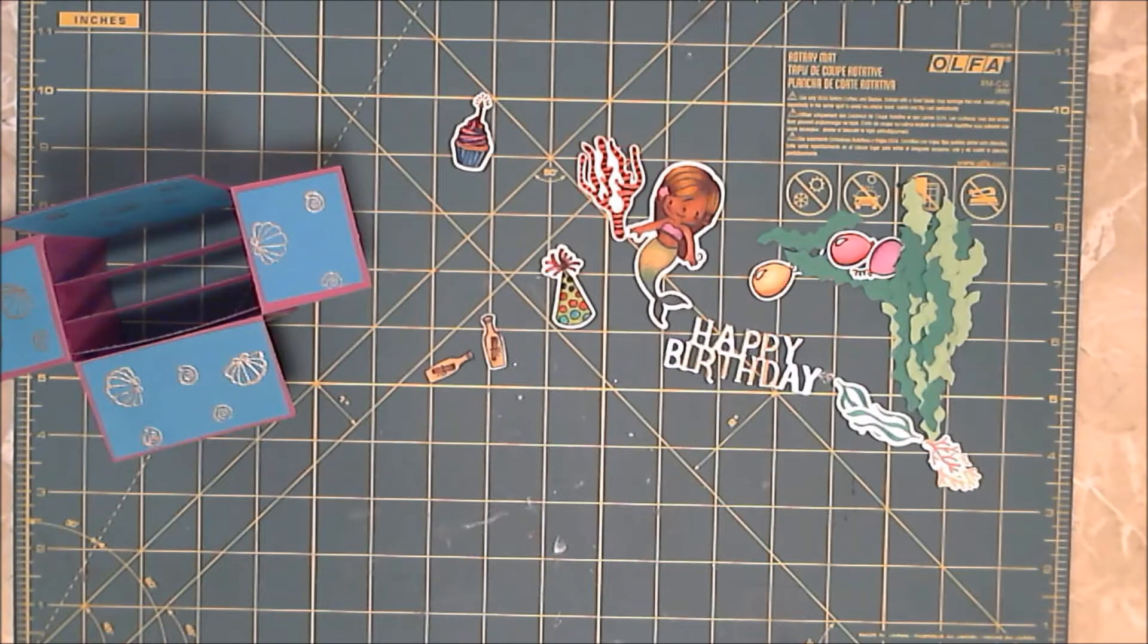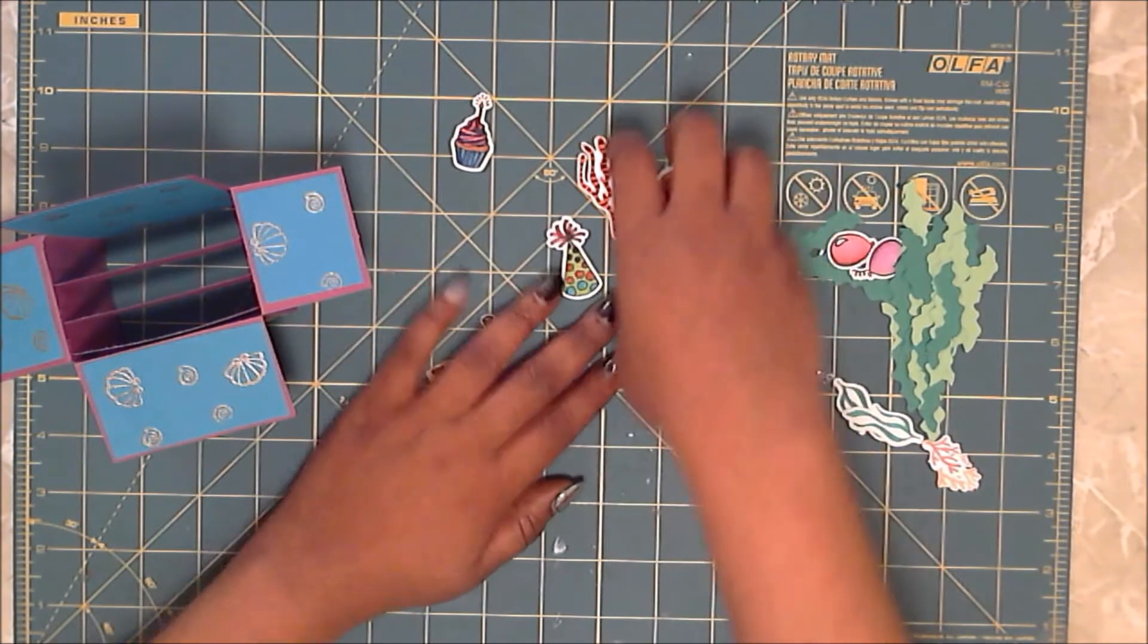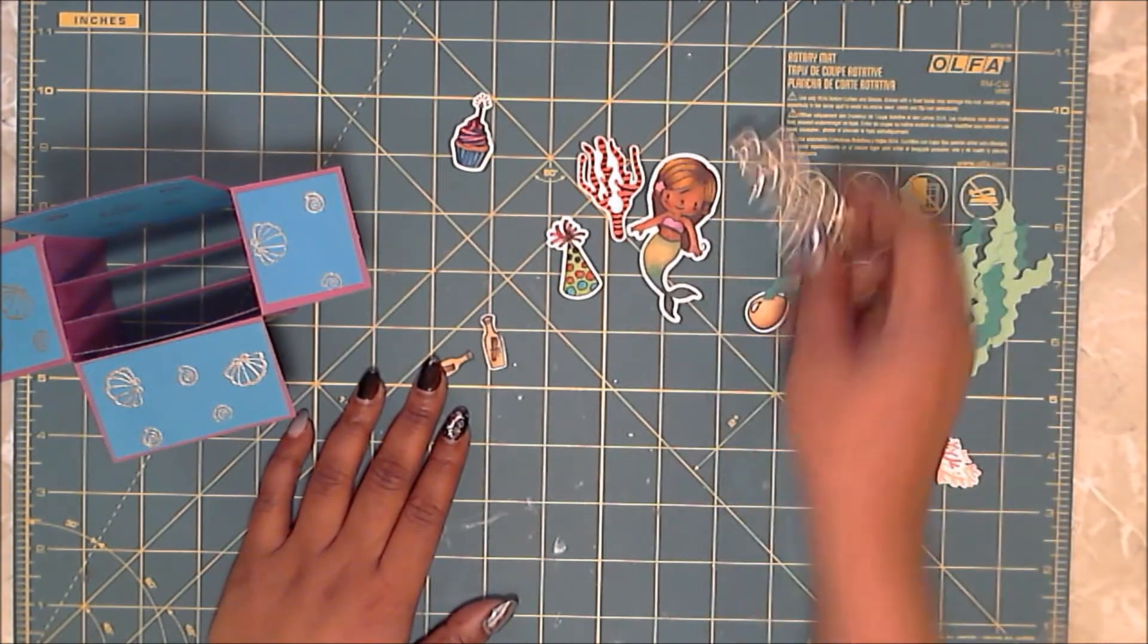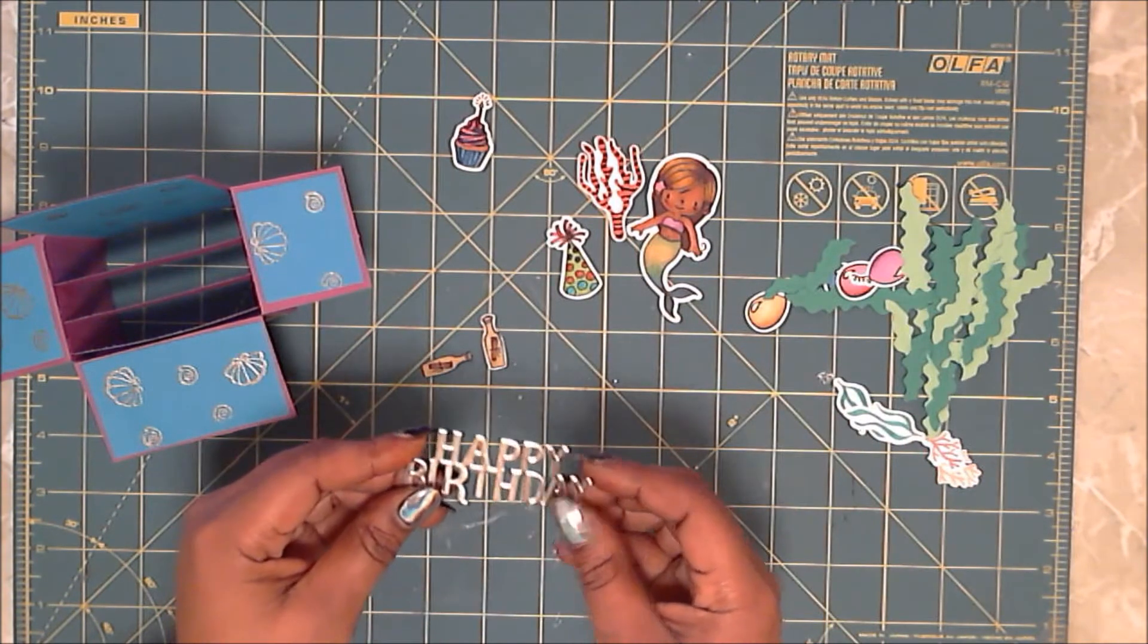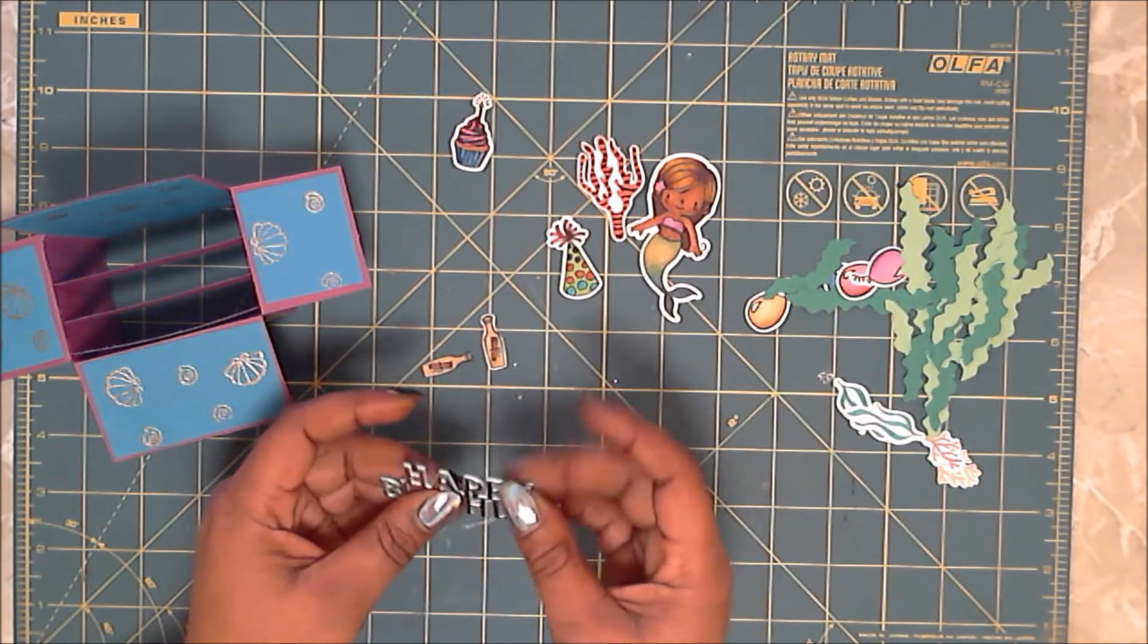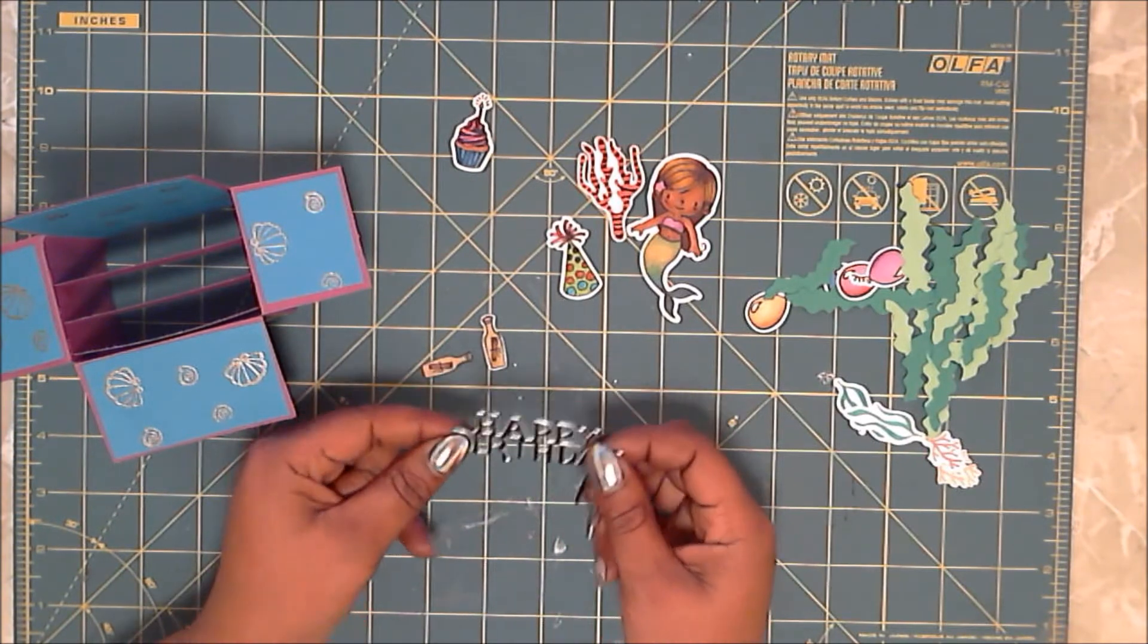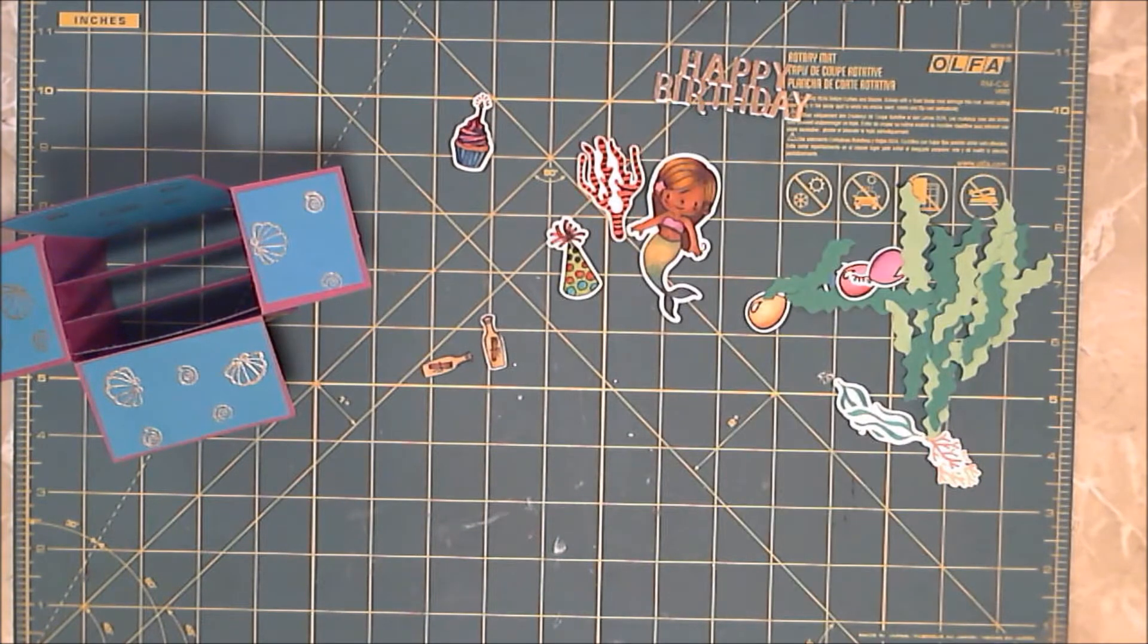I've already prepared all of the elements for the inside of the box card, and these are them pretty much laid out here. This is going to be a birthday card. So I did layer a few pieces of cardstock with a gold foiled cardstock on top to give me a nice little thick happy birthday sentiment for the inside of the box.